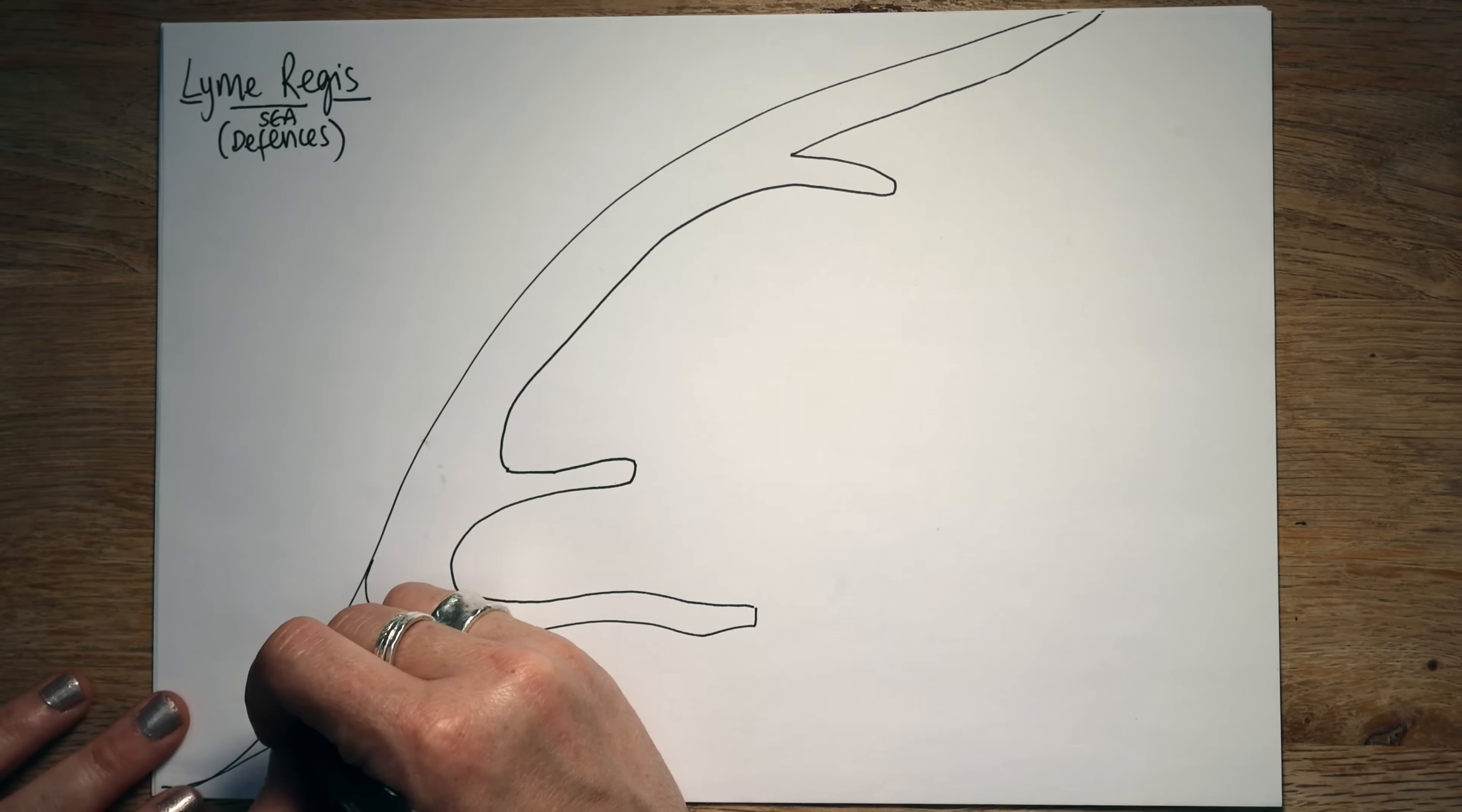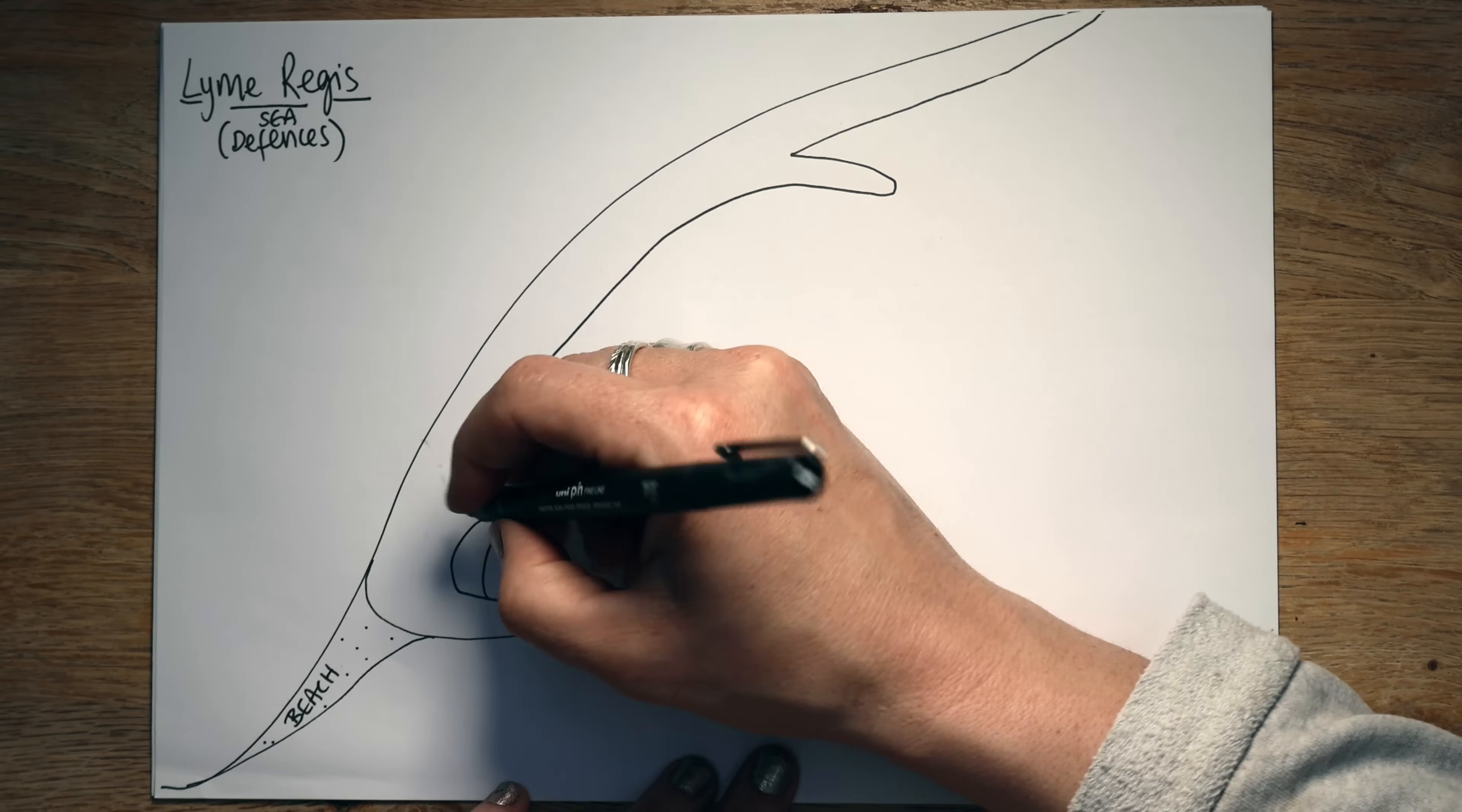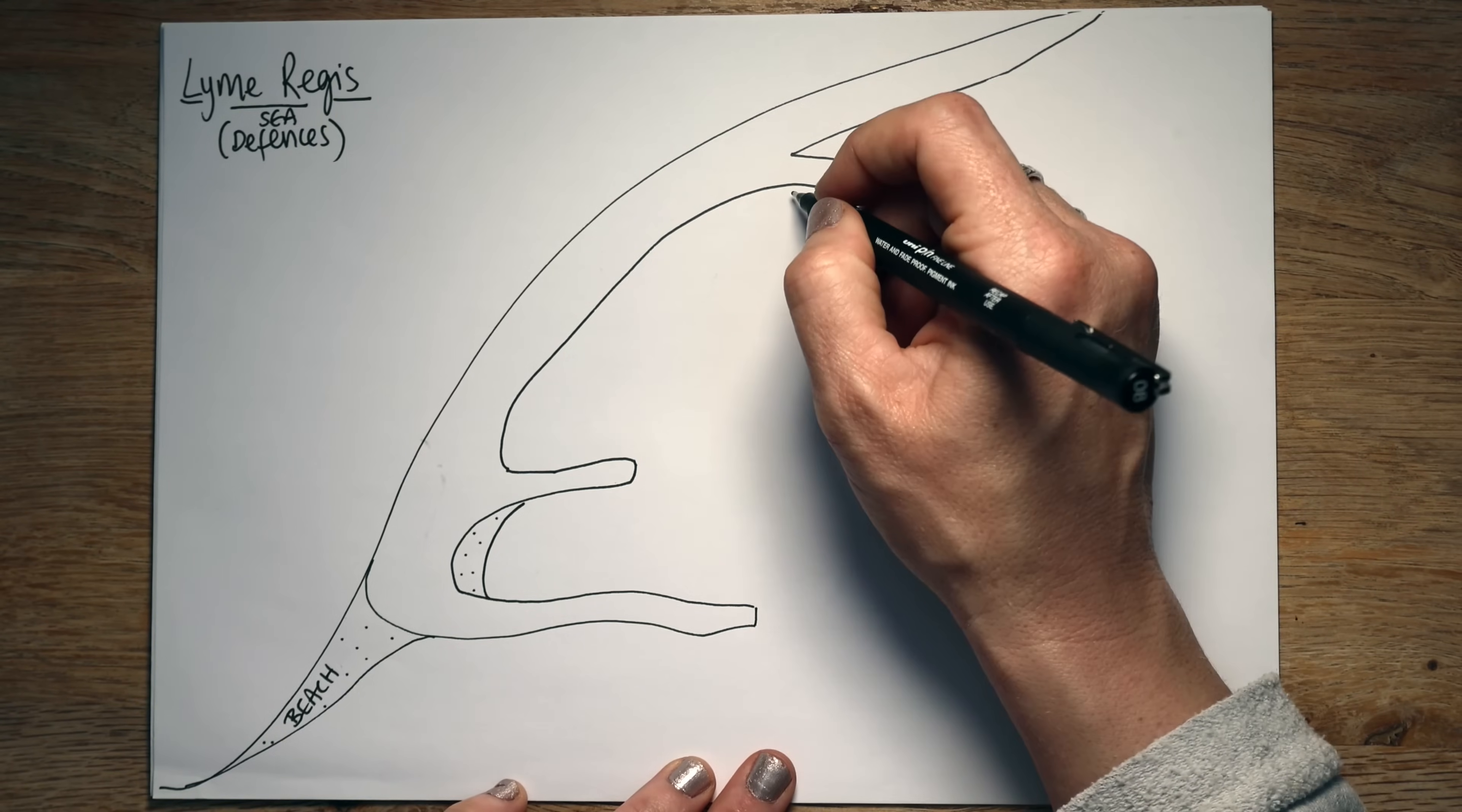Instead I'm going to focus on what's happened actually in Lyme Regis. So if we label some of these, we've got beach down here, which we'll just draw some little dots in. We've got a small beach in now.